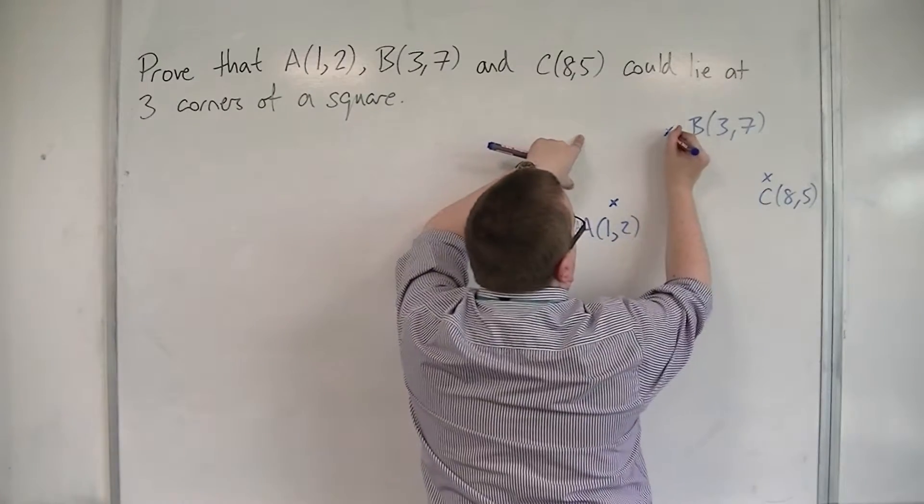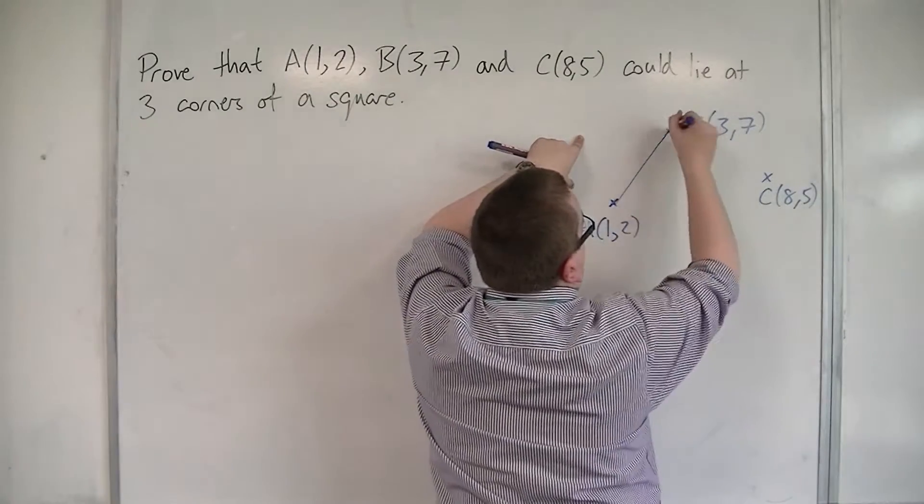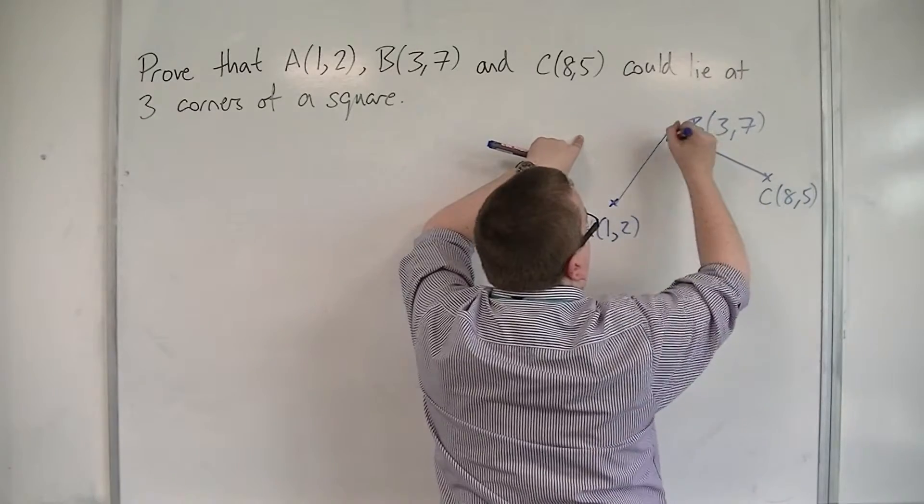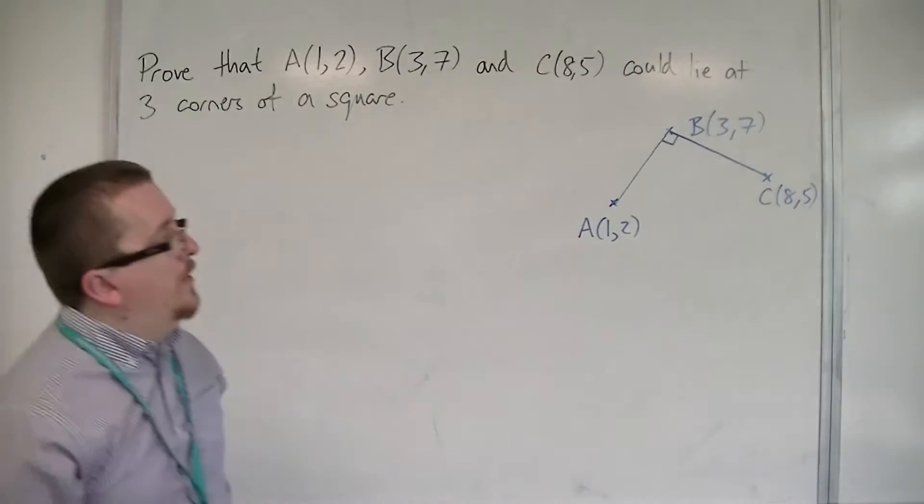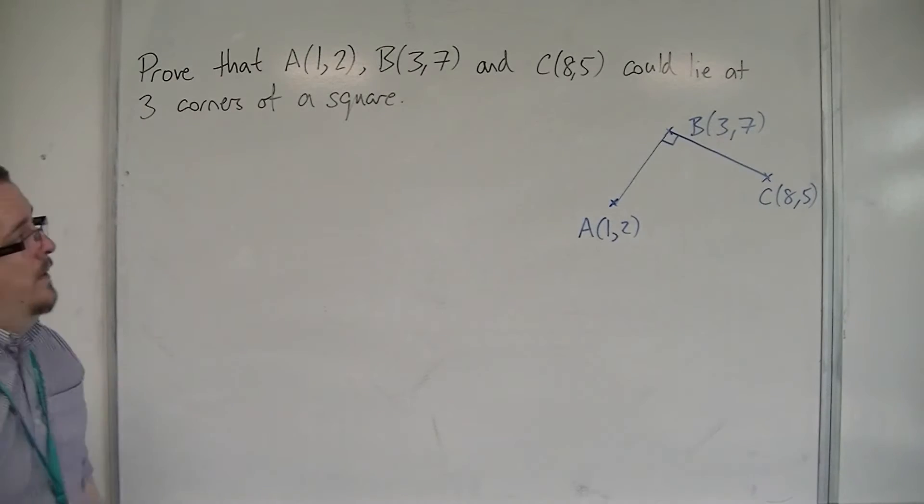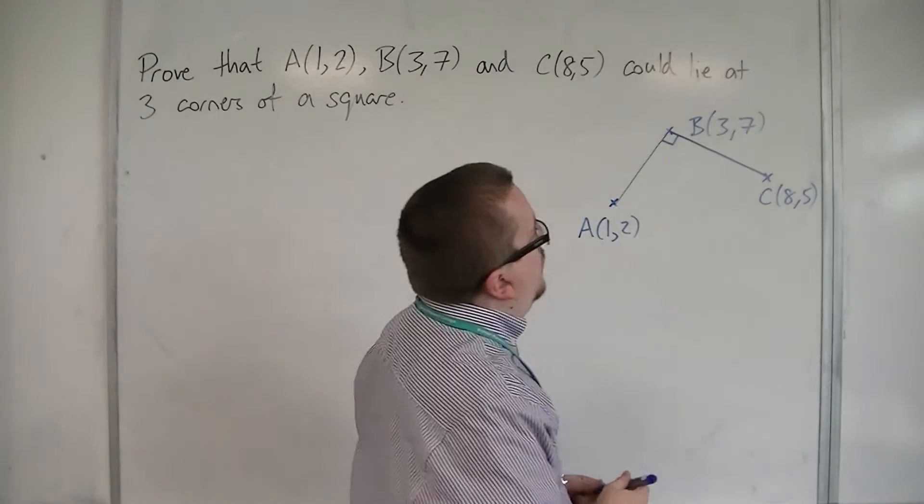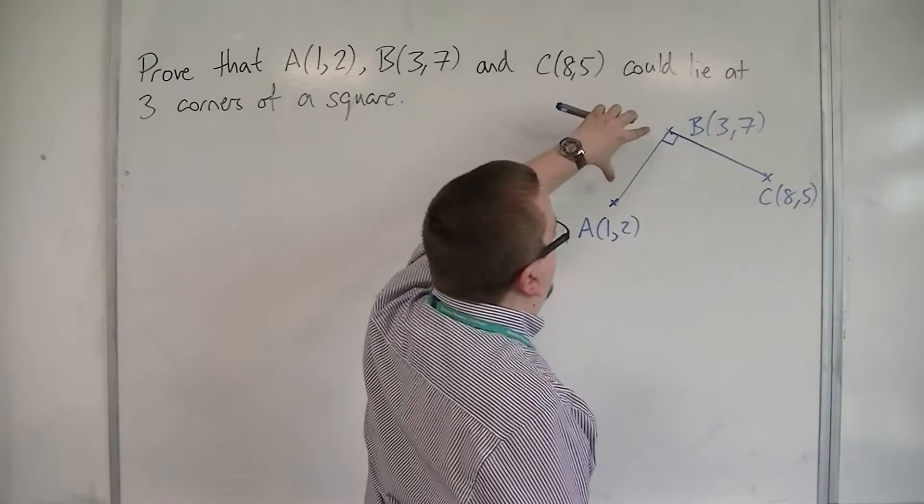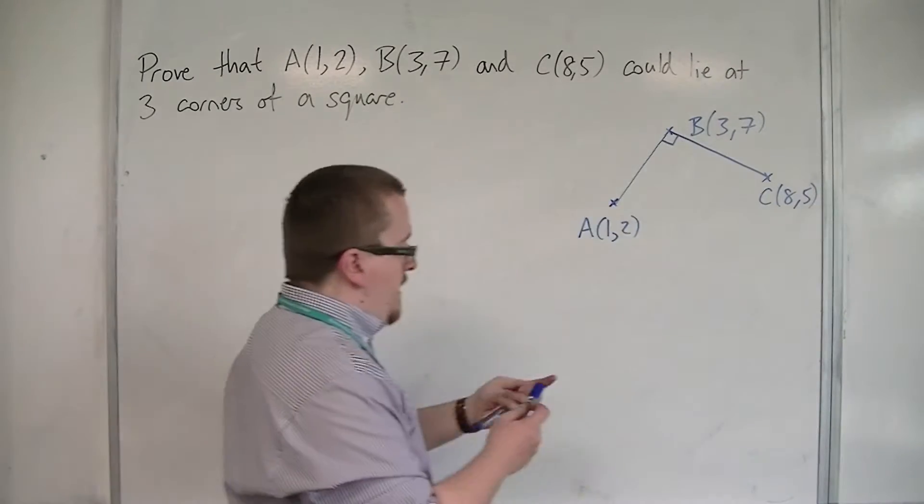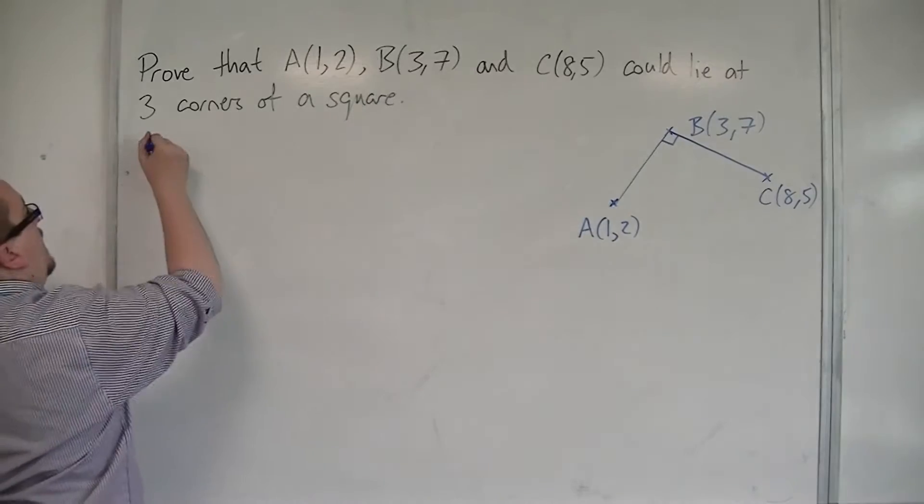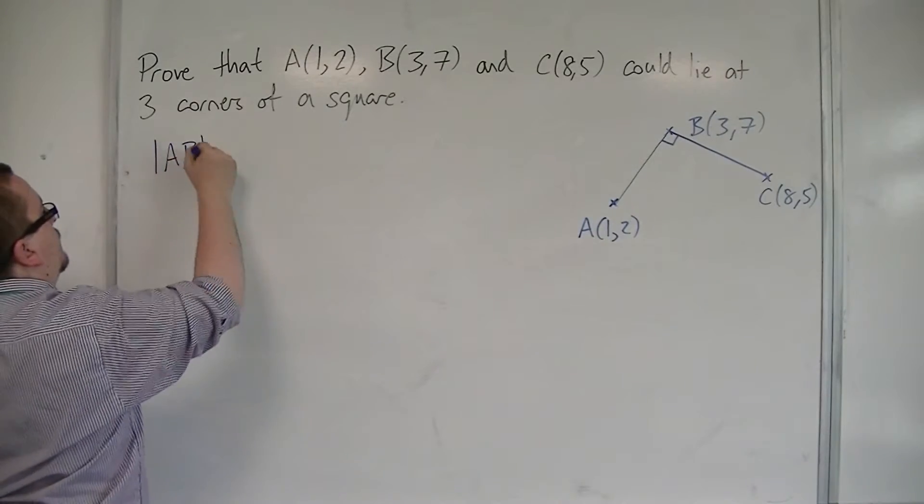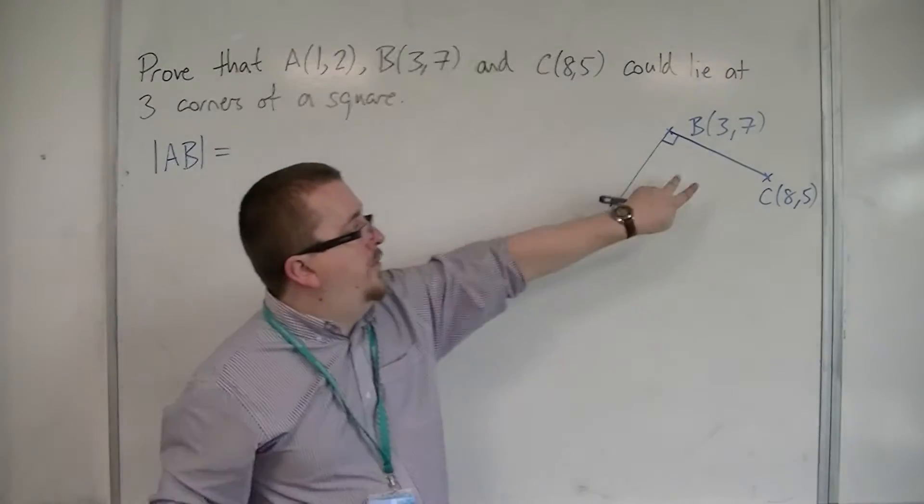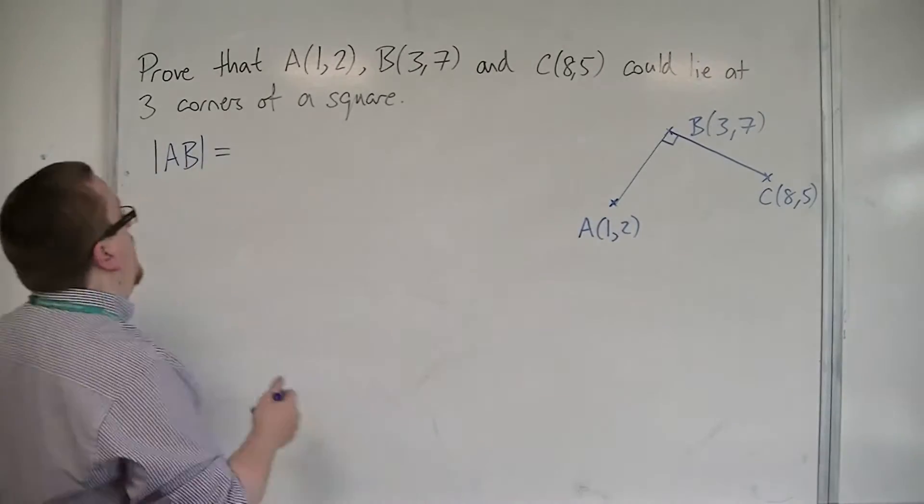What we're thinking about here is that this is actually part of a square. And so, what we're going to do is we're going to try and find the length of AB, so we want the length of AB, and we want the length of BC, we want them to be the same.